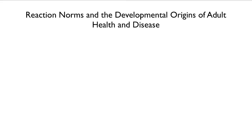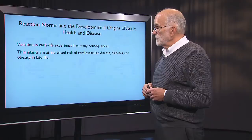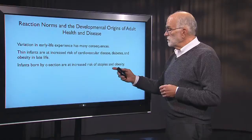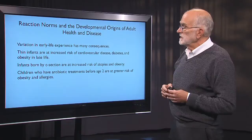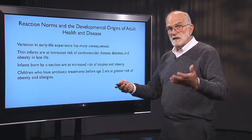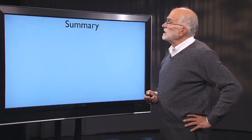Reaction norms, amusingly illustrated in the previous slide, actually have an important role in the origins of health and disease. Variation in early life experience has many consequences. Thin infants are at increased risk of cardiovascular disease, diabetes, and obesity in late life — that's called the metabolic syndrome. Infants born by C-section are at increased risk of atopies and obesity; atopies include asthma, allergies, and eczema. Children who have antibiotic treatments before the age of two are at greater risk of obesity and allergies. These are being mediated by the microbiome — early life experience sets up the microbiome, which then mediates allergies, autoimmune diseases, and obesity. These are reaction norms: responses of genotypes to variation in the environment.